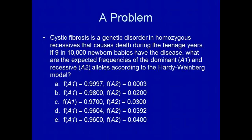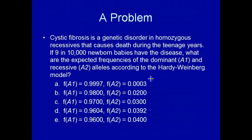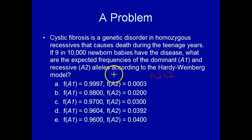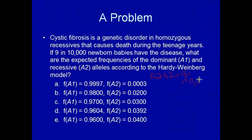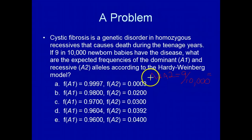Cystic fibrosis is a genetic disorder — homozygous recessive — that causes death during the teenage years. If 9 in 10,000 newborn babies have the disease, what are the expected frequencies of the dominant A1 and recessive A2 alleles according to the Hardy-Weinberg model? We know that individuals with two A2 alleles have cystic fibrosis, and we know that 9 in 10,000 newborn babies are A2, A2.